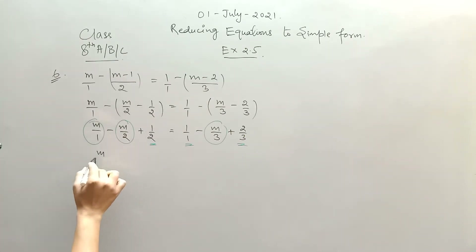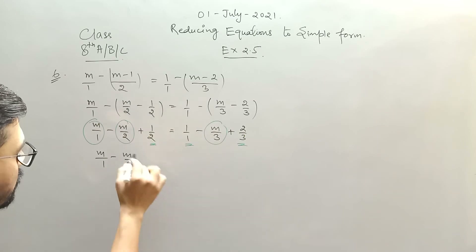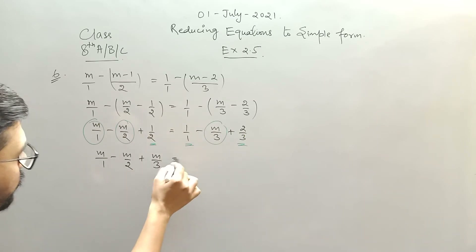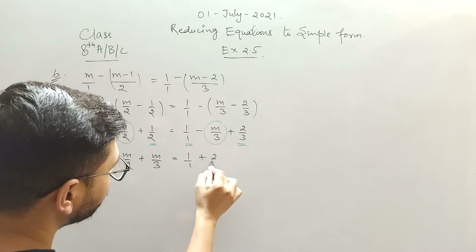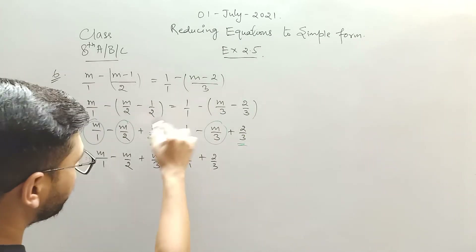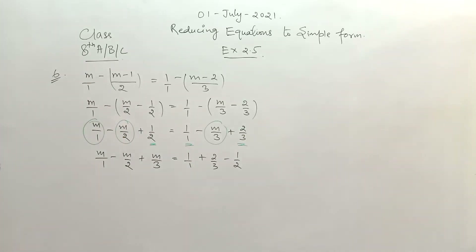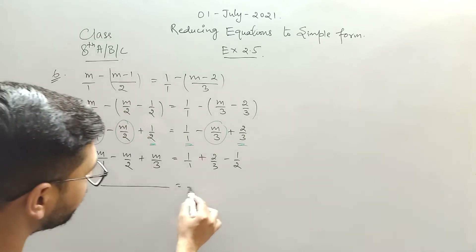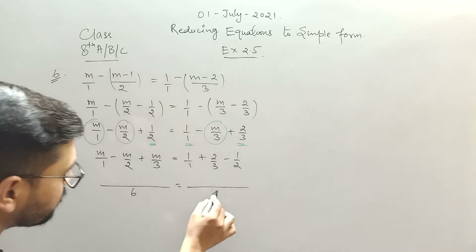So m by 1 minus m by 2 — this term I need to transpose to the LHS. 1 stays as it is, plus 2 by 3 stays as it is, and I just transpose 1 by 2 from the LHS to RHS with a negative sign. Now take the LCM of 1, 2 and 3. The LCM is 6.